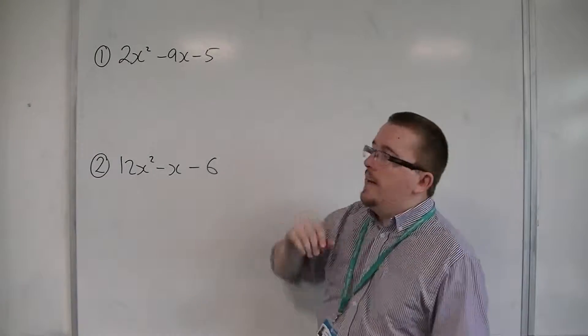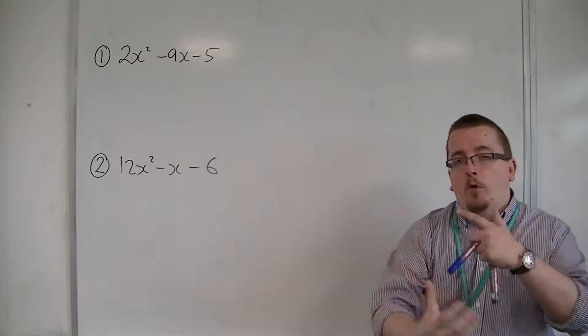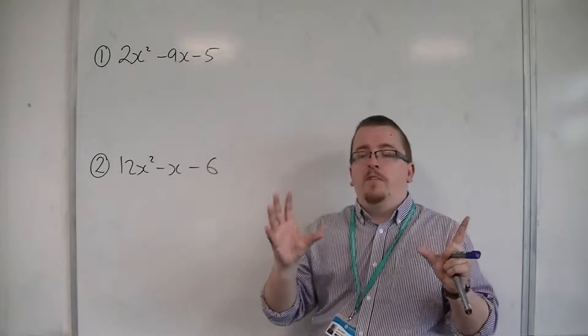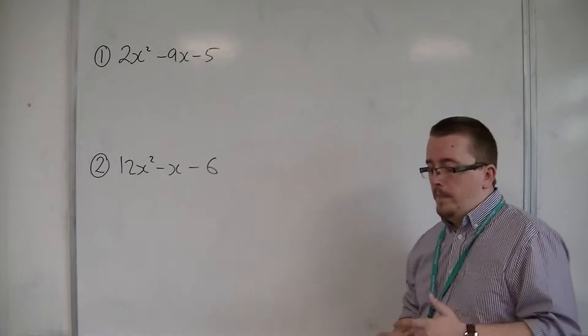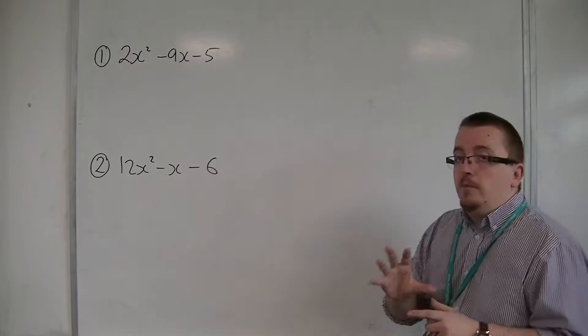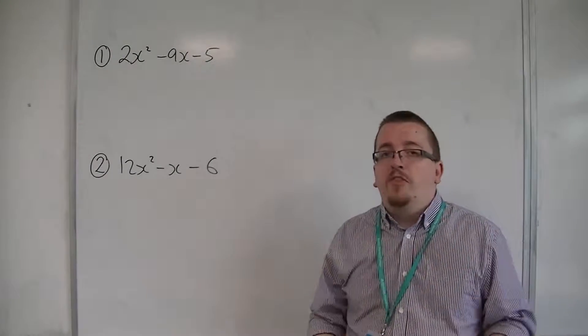So let's have a look at number 1: 2x-squared minus 9x minus 5. A lot of people will automatically go into opening up the double brackets and trying to find numbers that will make it work. This method that I'm going to show you in this video allows you to do it in a more methodical way.